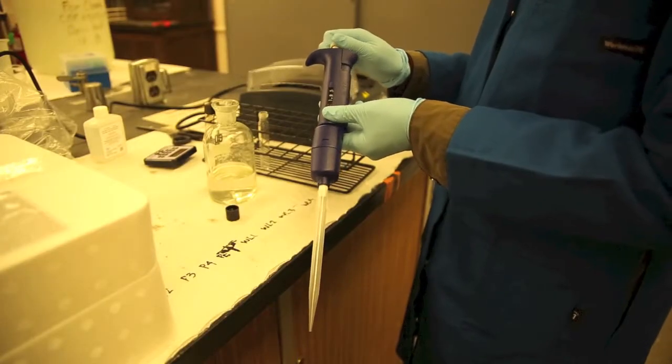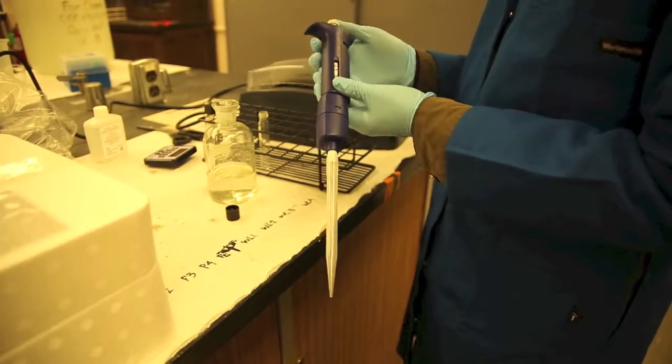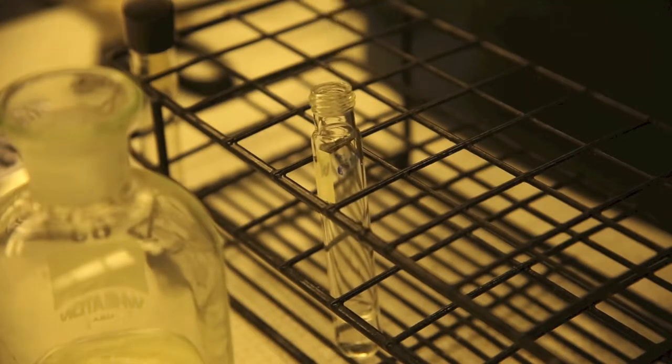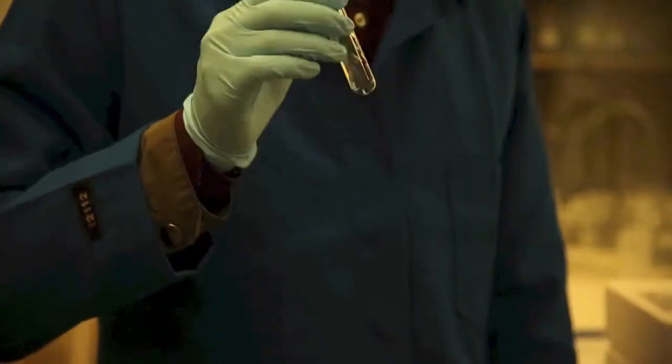Now use a pipette to add 2 milliliters of the digested treatment-prepared sample into one total nitrogen reagent C vial. Now shake to mix.